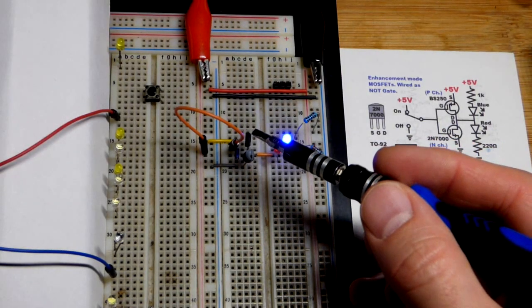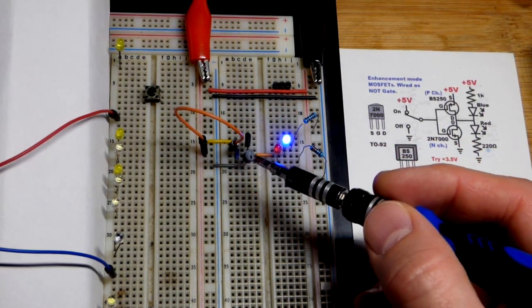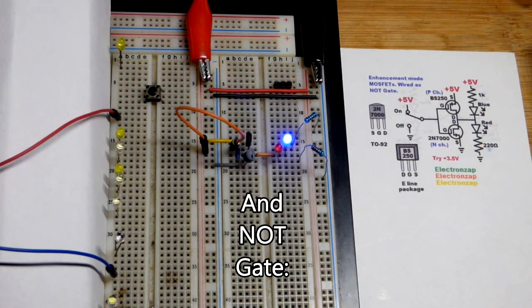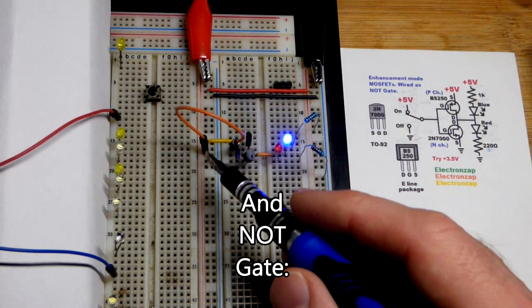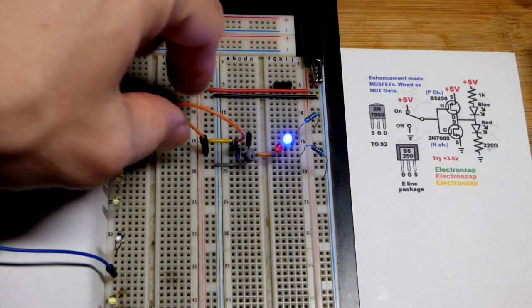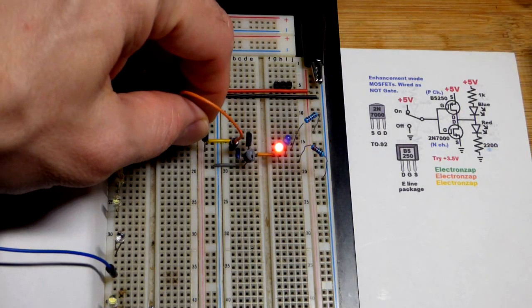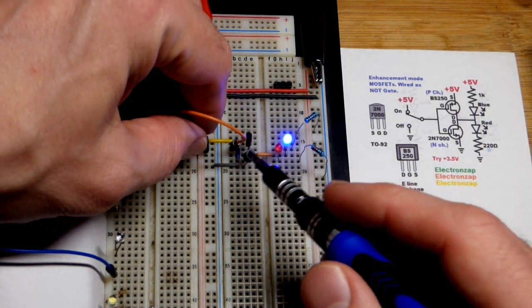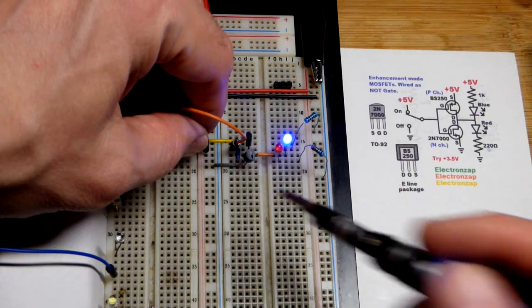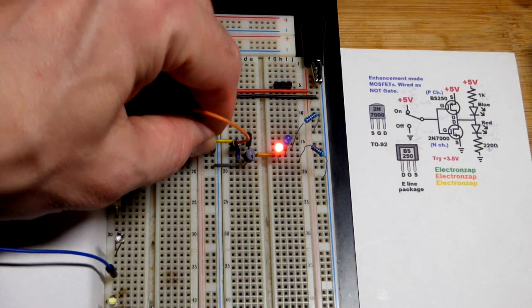So now we have a P-channel enhancement mode MOSFET and an N-channel enhancement mode MOSFET wired as push-pull switches. Our signal here is to the positive supply, we can go directly to the positive supply, and the output was low. So the N-channel enhancement mode MOSFET was on. We'll look at that in more detail a little bit later.